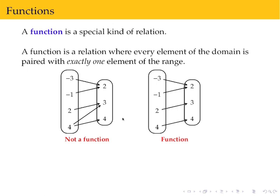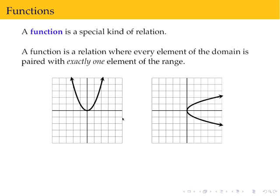We can also look at graphs and determine which relation is a function. Remember, the domain is all of the x values and the range is all of the y values. So if I'm looking at the second one, for a place where an x value, an element of the domain, is paired with more than one element of the range, that would cause it to not be a function.